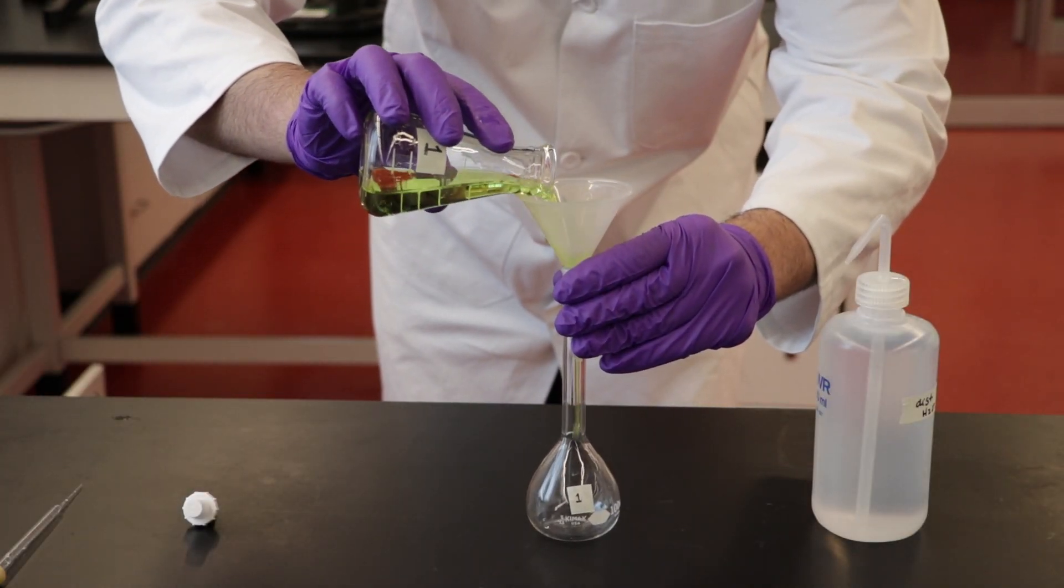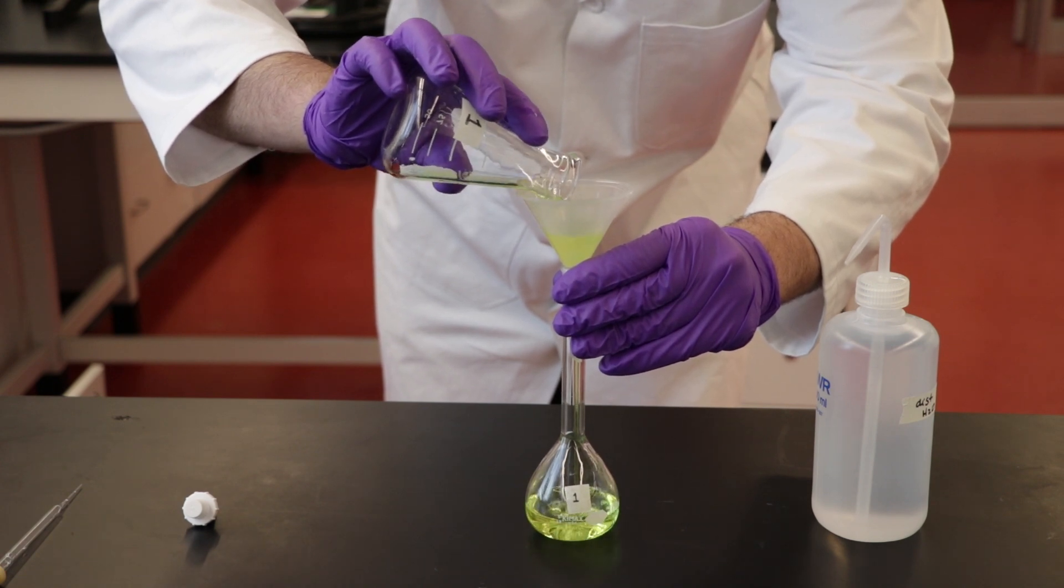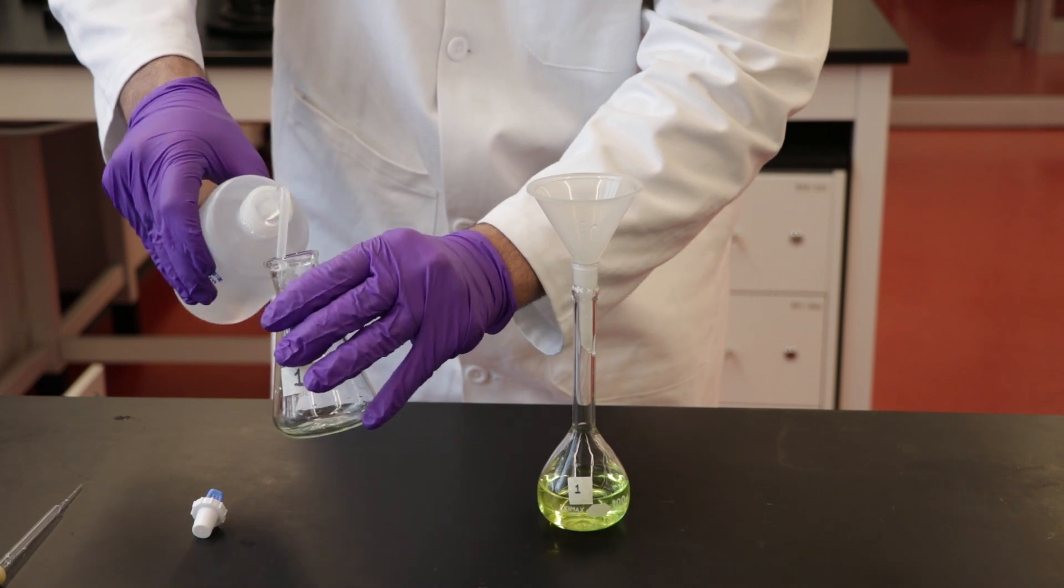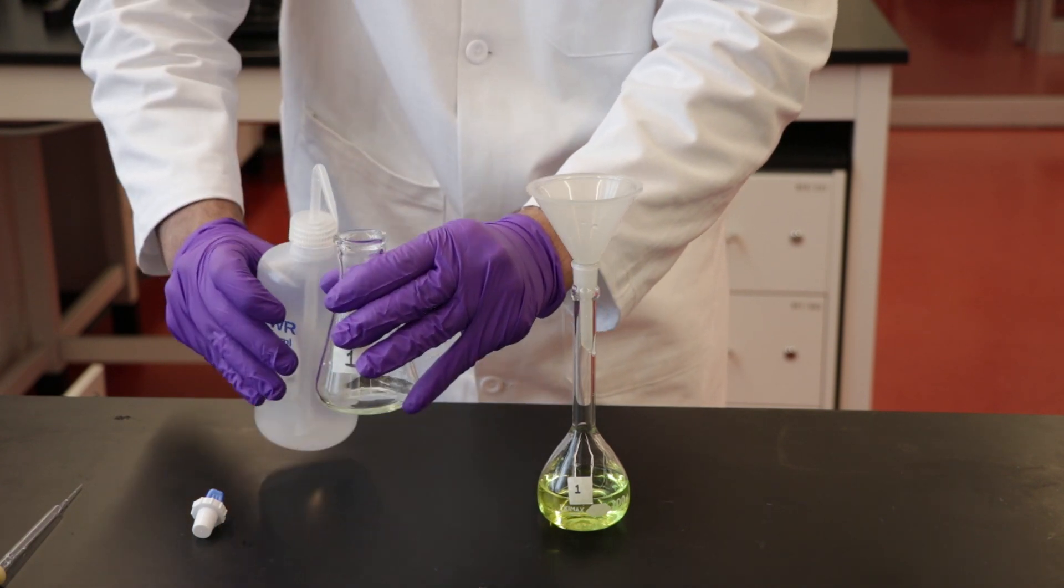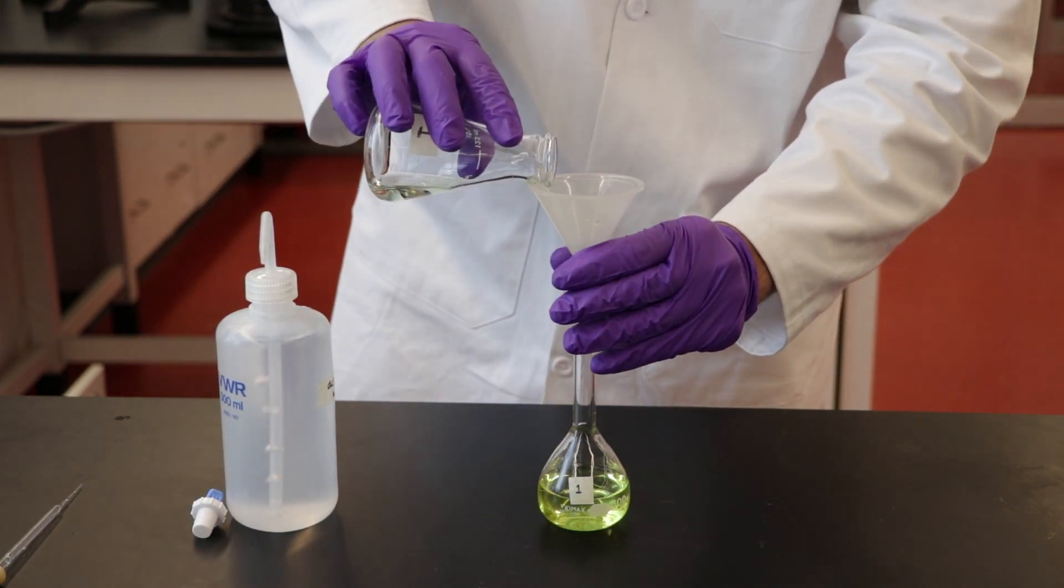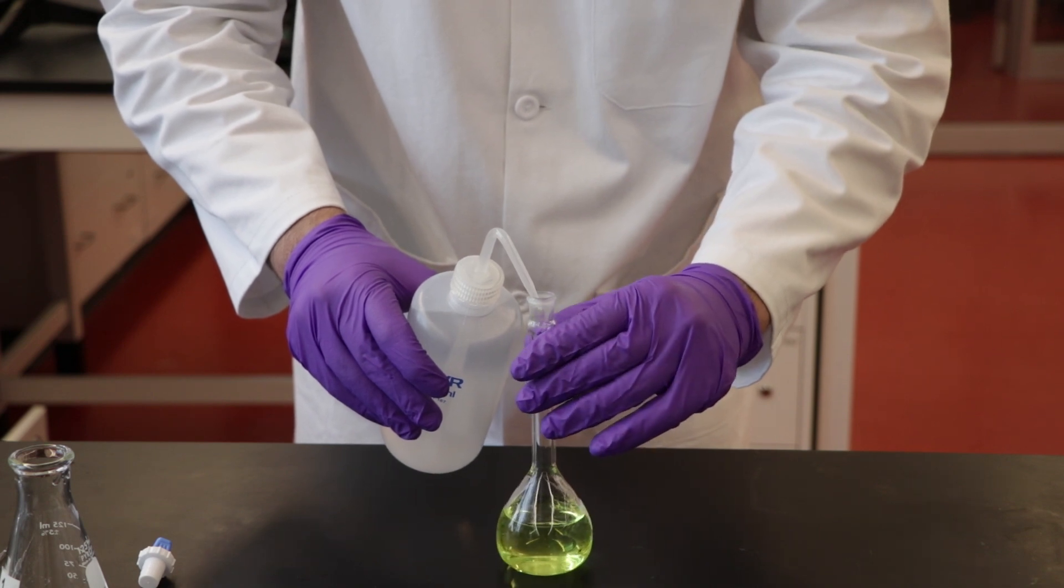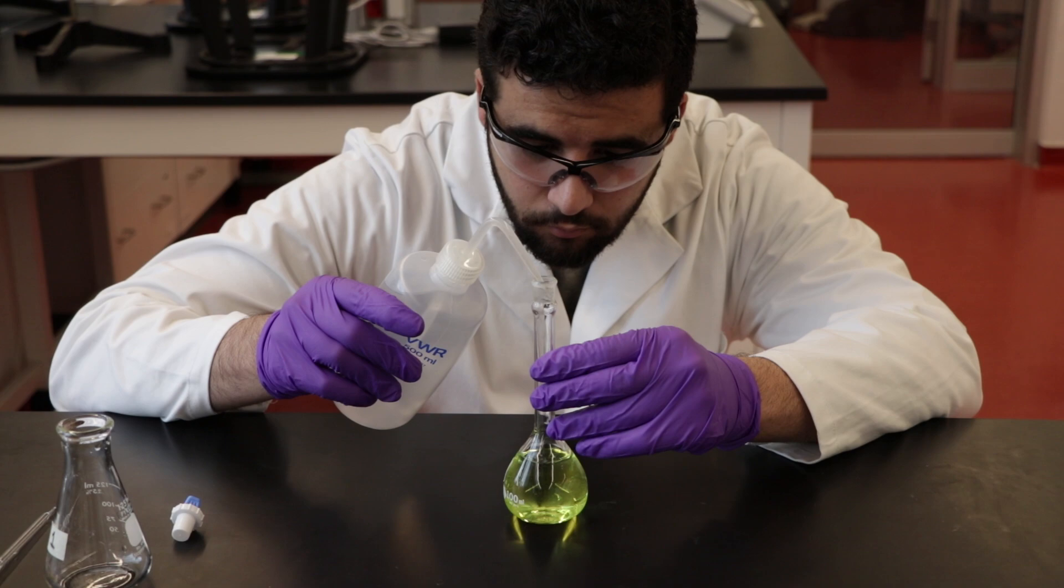Using a liquid funnel, transfer the contents of each Erlenmeyer flask into the corresponding volumetric flask. Use a wash bottle with distilled water to rinse the inside of the Erlenmeyer flask and transfer the contents to the volumetric flask. Rinse the funnel and the neck of the volumetric flask. Fill the volumetric flask with distilled water until the beginning of the narrow neck.